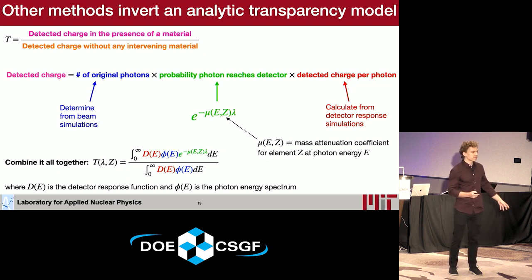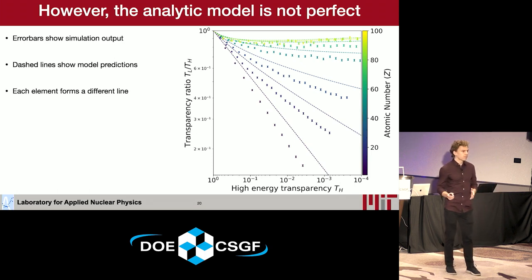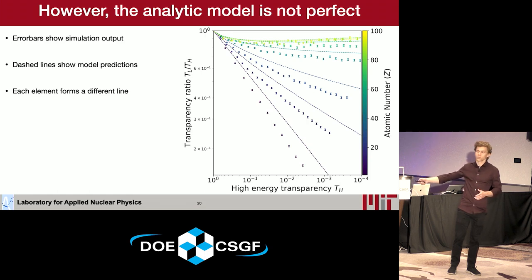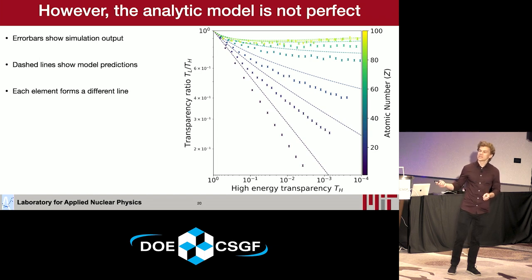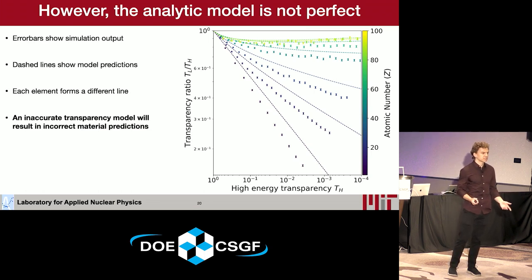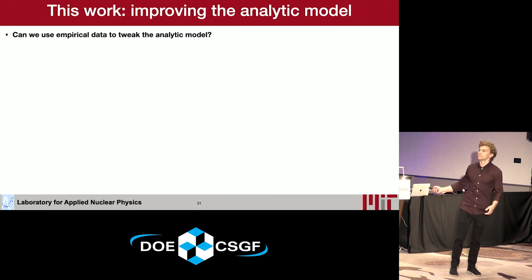This sounds great in principle — it requires no calibration because it's an analytic model, and the function is continuous in Z, so there's no extrapolation uncertainty. However, the analytic model doesn't work very well. The error bars correspond to simulation output and the dashed lines to model predictions, and you can see the model does not accurately predict the simulation output. If your model is inaccurate and predicts incorrect transparencies, when you invert it you get incorrect material predictions — which is why this framework isn't actually used at ports today.